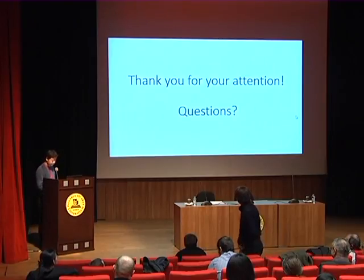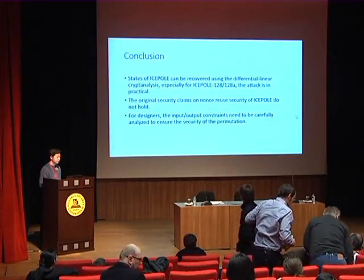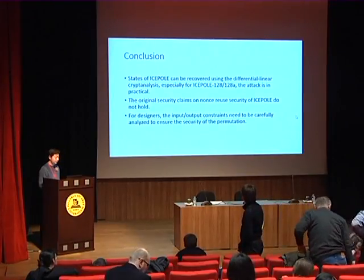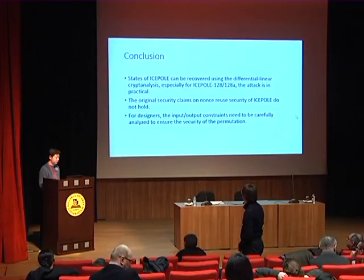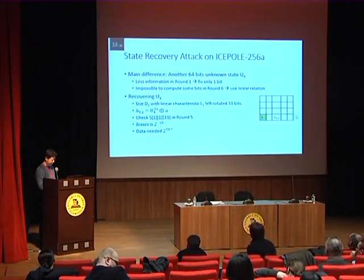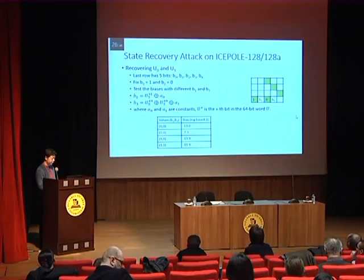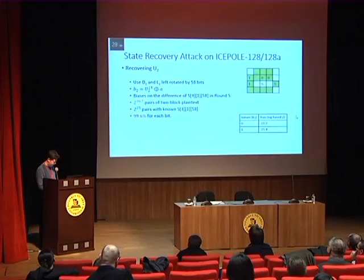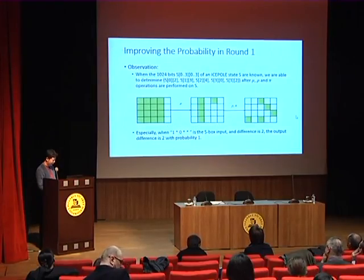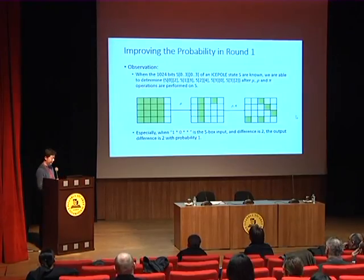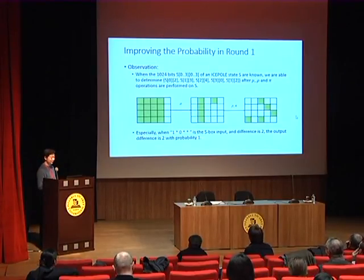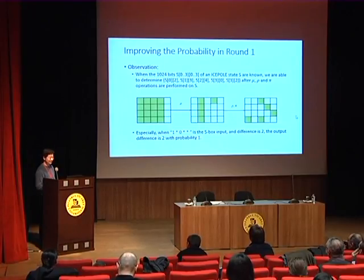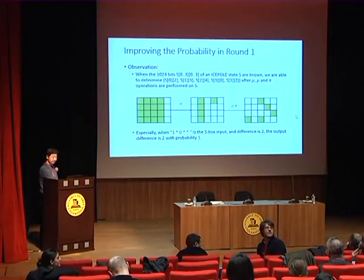Question: You are attacking a cipher quite similar to Keccak. Can you explain why the attack is so much better than the best attack on Keccak? Answer: One reason is that the linear diffusion layer in Keccak is much stronger. Here, after the linear layer, you can still know five of the bits, and the inverse of this linear layer is much easier than Keccak's — for Keccak, inverting would be quite difficult.